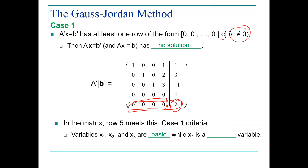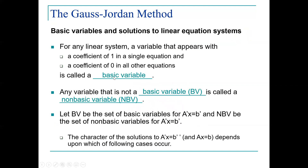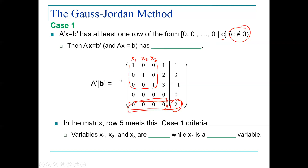Variables x1, x2, and x3 are basic variables. For any linear system, a variable that appears with a coefficient of one in a single equation and a coefficient of zero in all other equations is called a basic variable. So for x1, you have a one here and then zero for the other equations. The same thing happens for x2 and x3 — all zero for the other equations. So those three variables are basic. Variables x1, x2, and x3 are basic variables, while x4 is the non-basic variable.